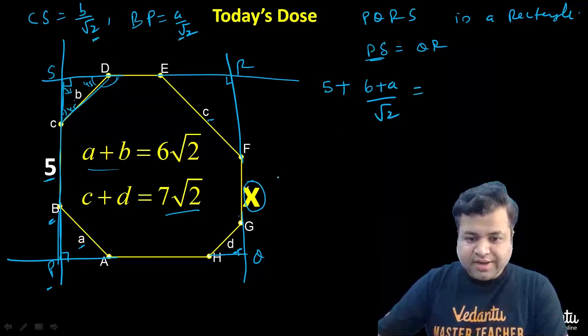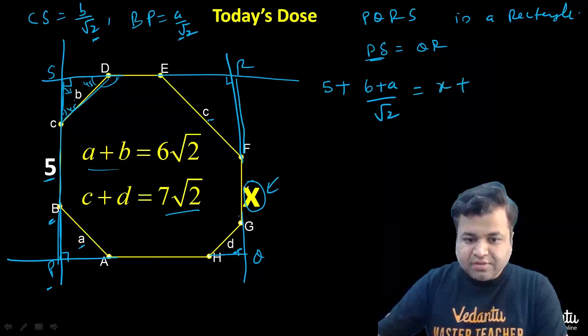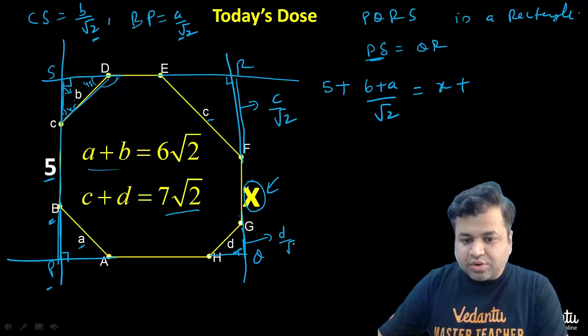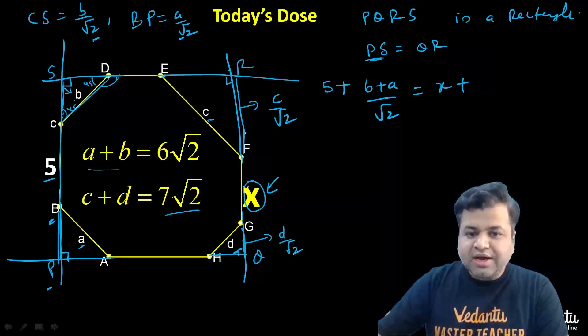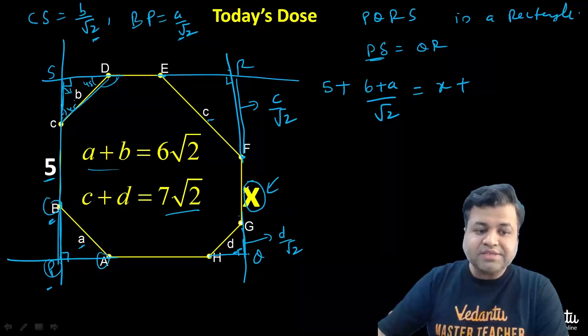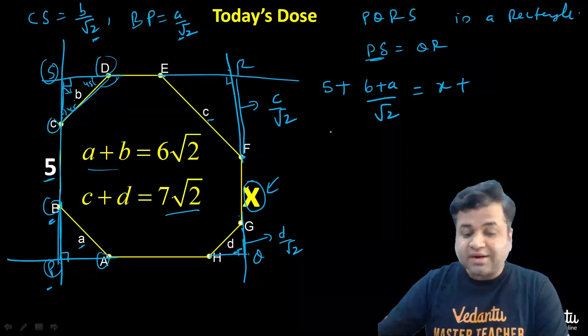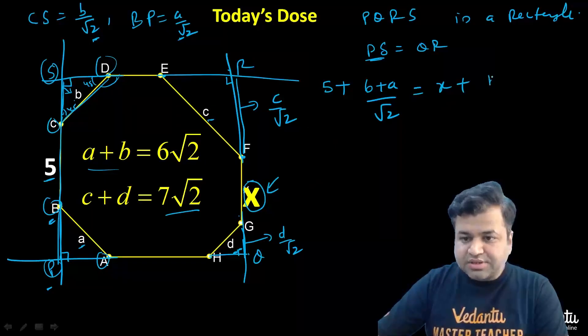Similarly QR will be nothing but X plus RF plus GQ. This RF will be clearly C upon root 2. And this GQ will be D upon root 2. Reason because ERF is an isosceles right angle triangle. Same is GHQ, same is ABP, and same is SD. They all are isosceles right angle triangles. So that means this should also be equal to X plus C plus D upon root 2.